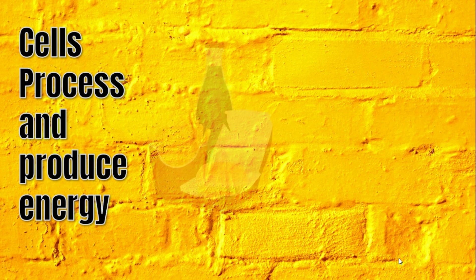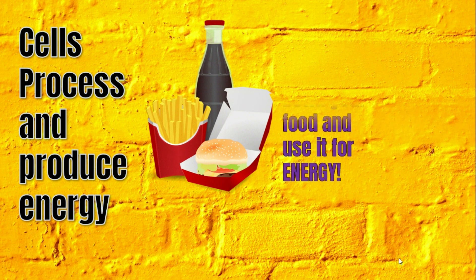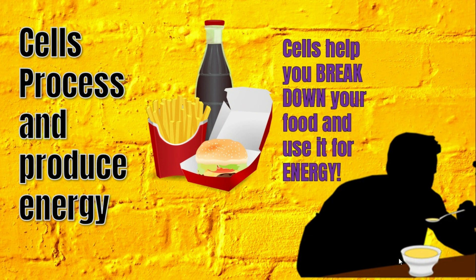Cells process and produce energy. Think of the food that you eat — cells help you break down your food and use it for energy. You can't just have a burger and inhale it; it has to be broken down. You start by eating it, chopping it in pieces, swallowing it. Your stomach breaks it down, churns it up, and turns it into a chemical form so that your cells can use it for energy. So cells process the food and then produce energy for you from that food.